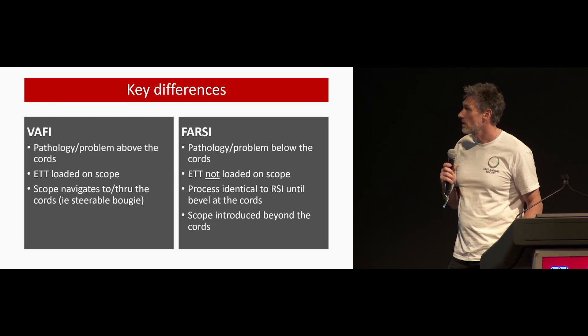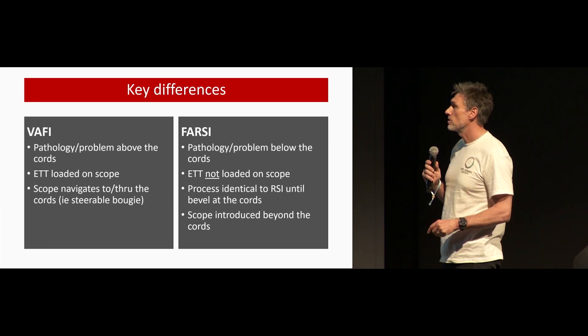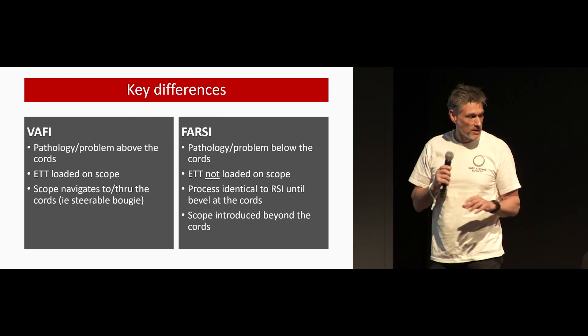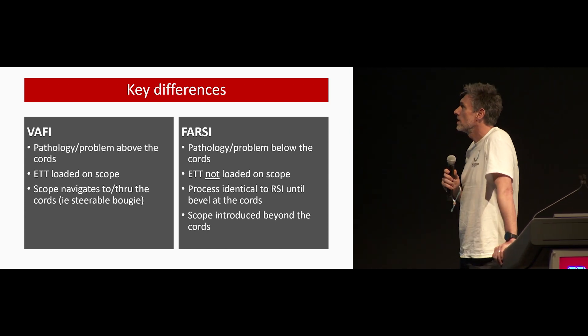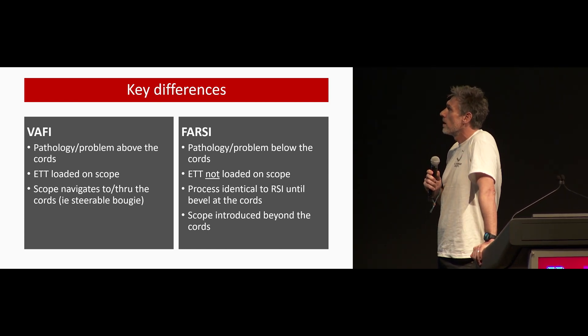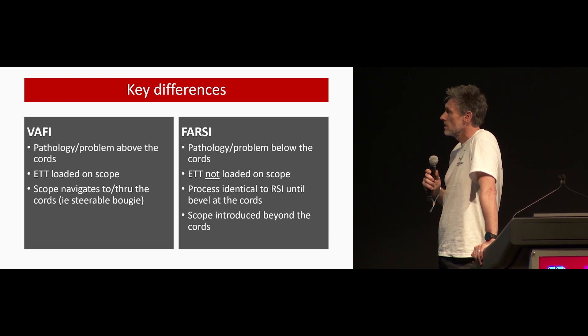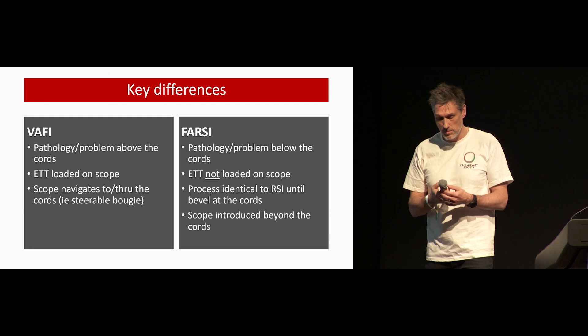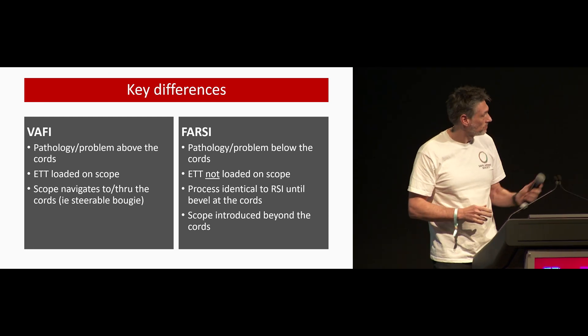The counter-argument is that if you put a piece of equipment there, people will use it for the wrong reasons without adequate training. To highlight the key differences: the VAFI is for pathology above the cords, ETT is loaded on the scope, used like a steerable bougie. The FASI is for pathology or problems below the cords, the ETT is not loaded, the process is identical to RSI until the bevel reaches the cords, the scope is then introduced beyond the cords, and it's designed to be as quick as possible.